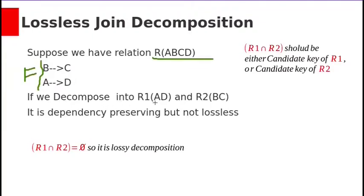If we decompose it into R1 with AD and R2 with BC, then this FD A determines D will hold on relation R1. This FD B determines C holds on relation R2. Here we are not losing any functional dependency.